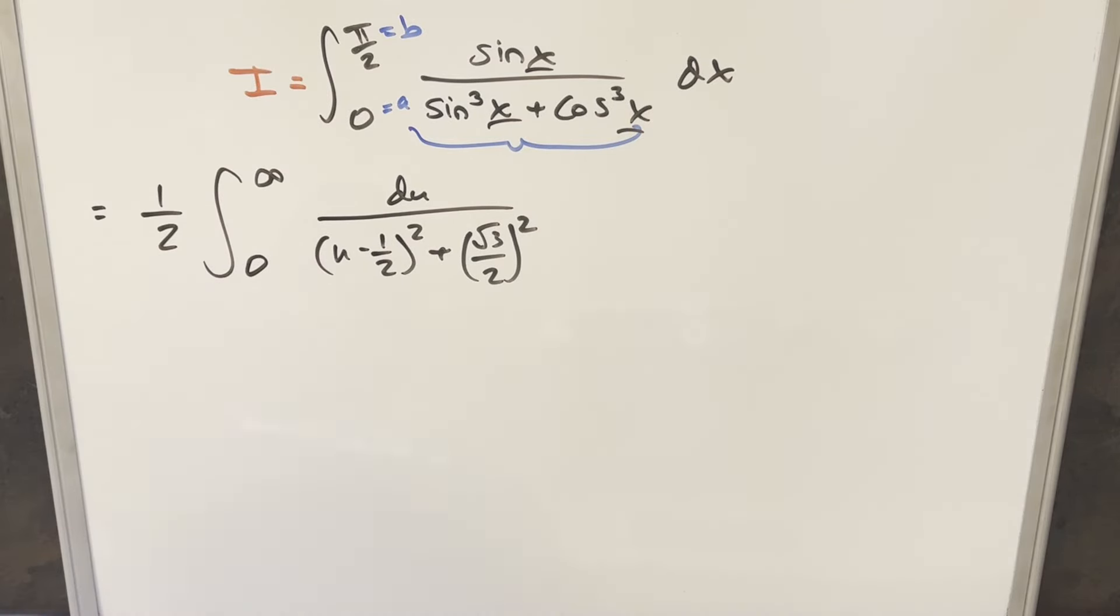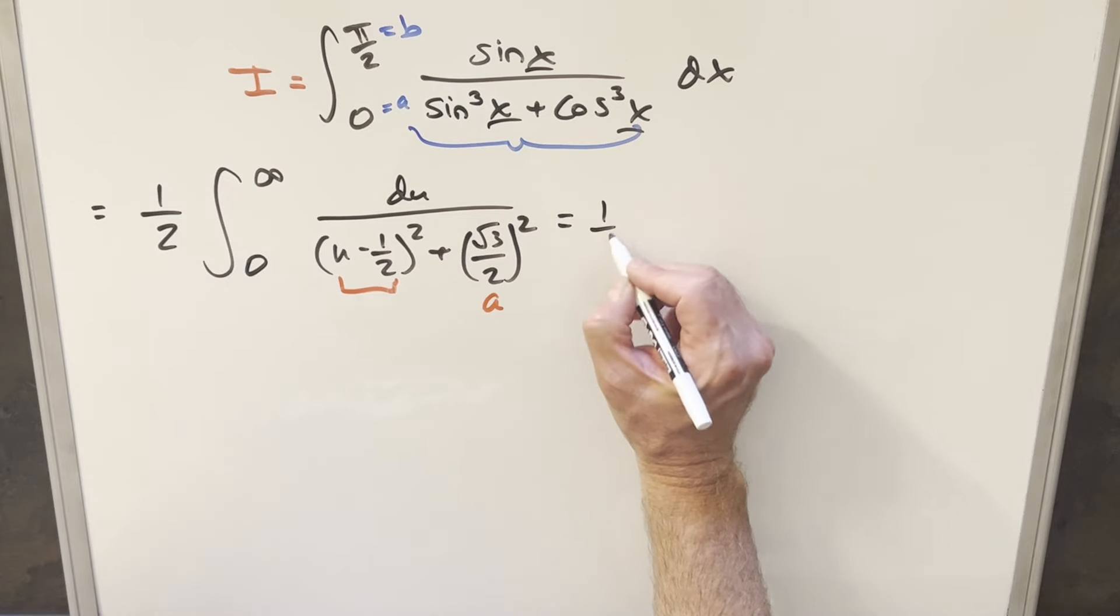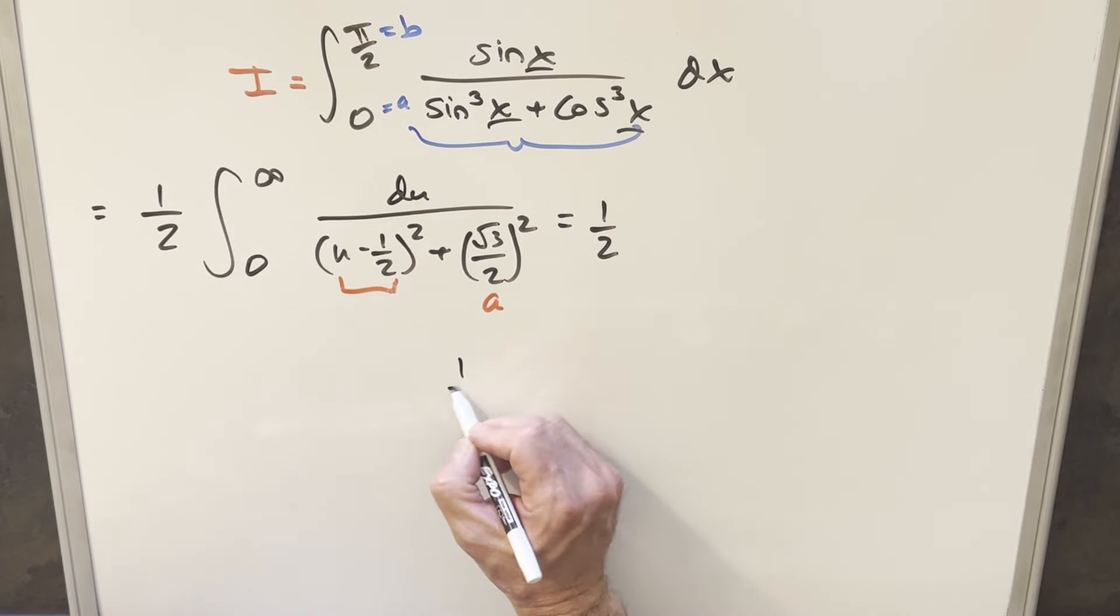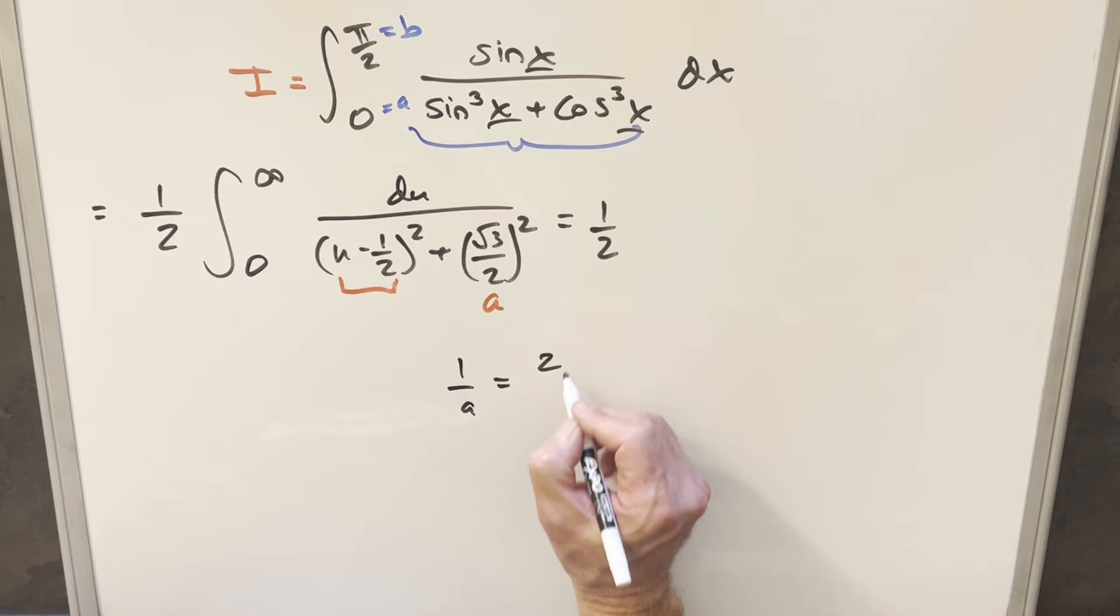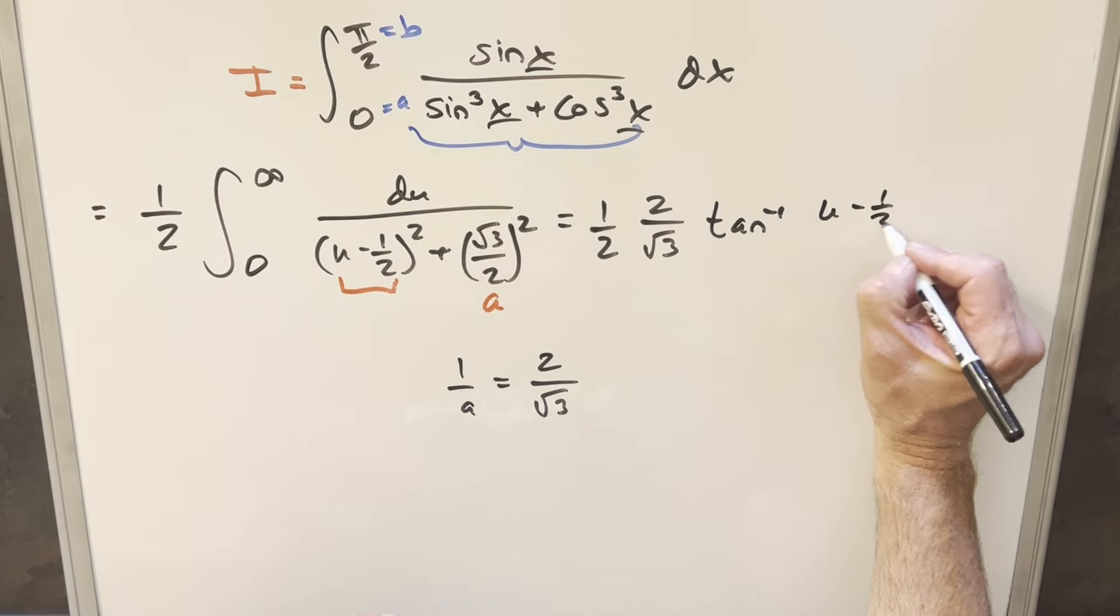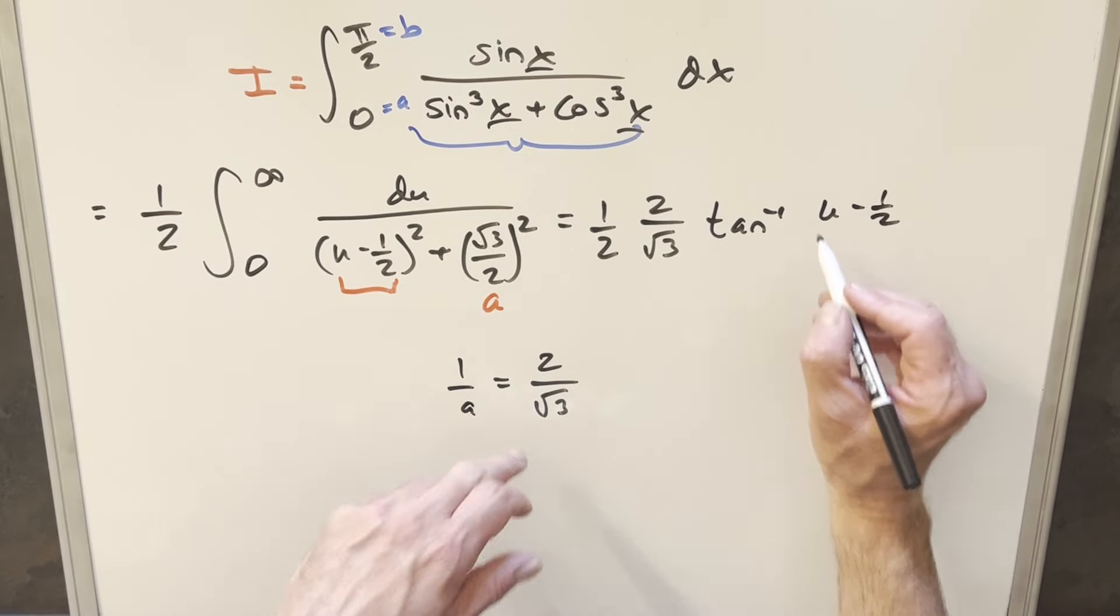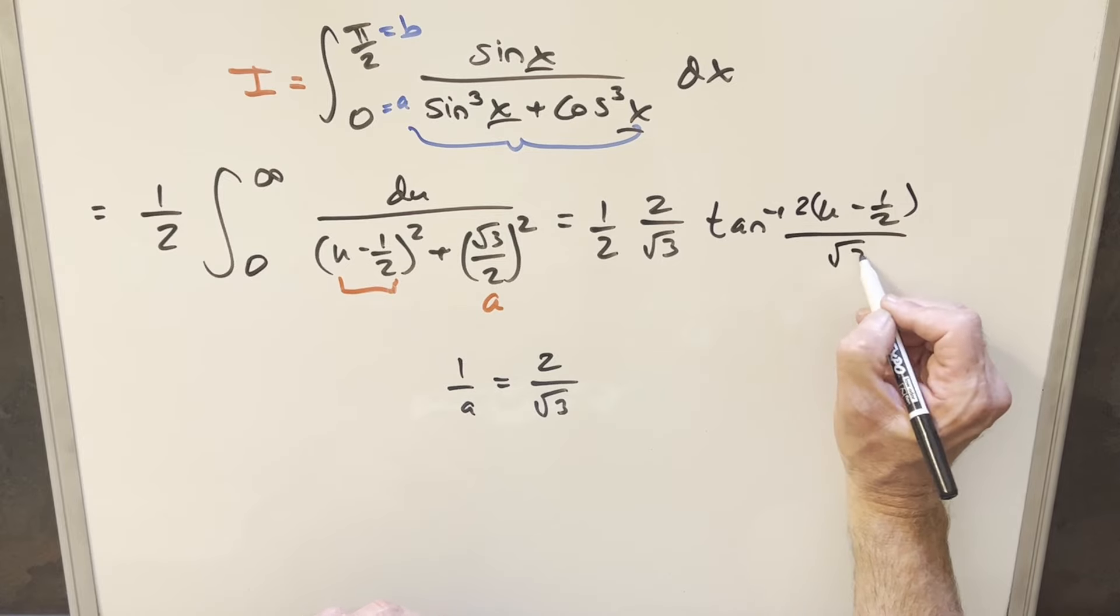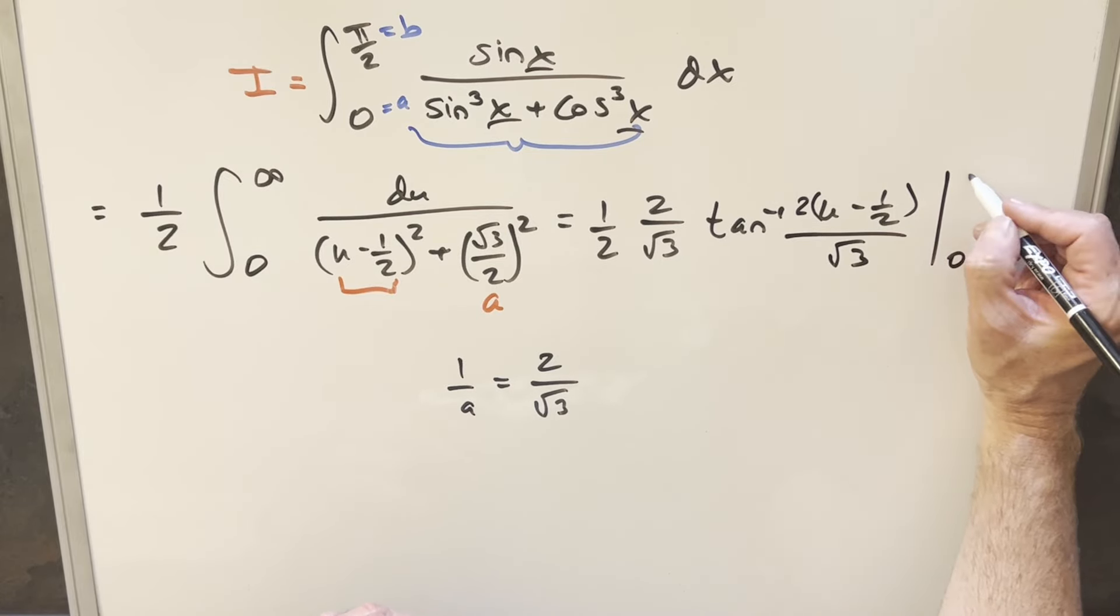You could do another substitution if you wanted, but it's not going to matter because the derivative of this is going to be just du. So we can look at this. Just look at this here as our variable. And this here is going to be like our a² part. So using the formula on this, we're going to have the 1/2 out front. Then we have 1/a. 1/a, just the reciprocal of this, is going to be 2/√3. So we'll write that in 2/√3. Our variable is going to be u - 1/2. And again, we have our 1/a value. So let's write it like this, 2/√3. And we're evaluating from 0 to infinity.